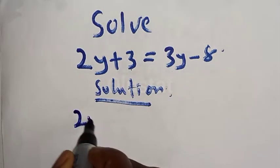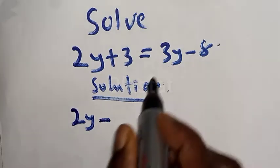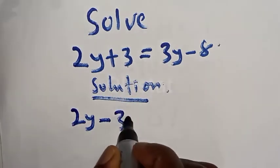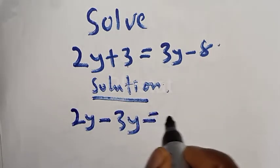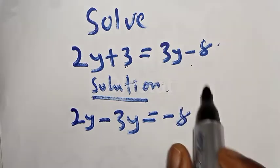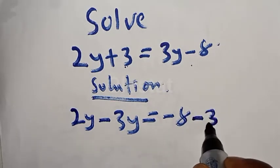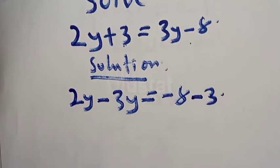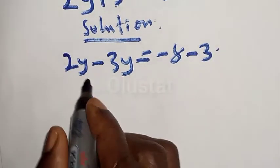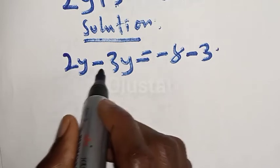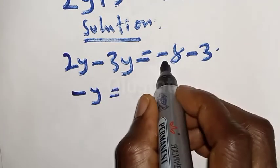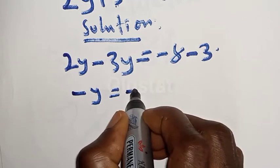We have 2y. If this plus 3y crosses to the other side, it will be minus 3y. Then equal to minus 8. If this plus 3 comes to the other side, it will be minus 3. This gives us 2y minus 3y is equal to minus 8 minus 3, which equals minus 11.